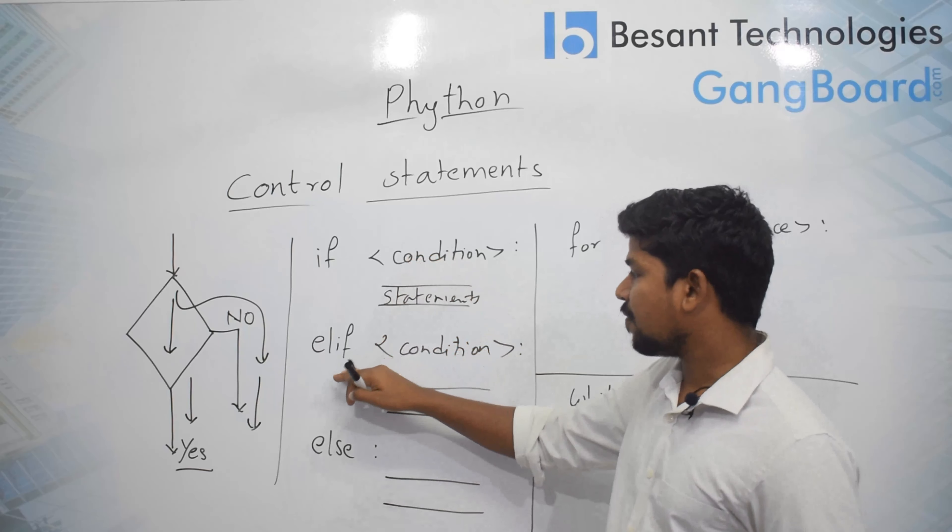The second type is for loop. We generally use a for loop for a particular number of rotations — when you know the number of times you want to execute a line, you can simply use a for loop. The syntax is: for object in sequence, then the statements. An object from the sequence will be taken and used in the statements.